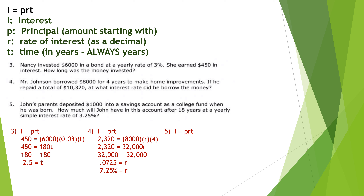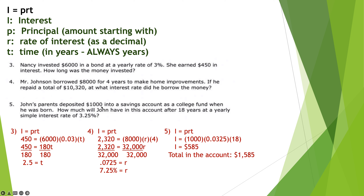Try number five. I equals PRT: the interest equals $1,000 (the deposit) times 3.25% which is 0.0325, times 18 years. Crunching those numbers gives $585 in interest earned. That is not how much is in the account — the original $1,000 deposit remains, plus $585 earned in interest, for a total of $1,585 in the account.